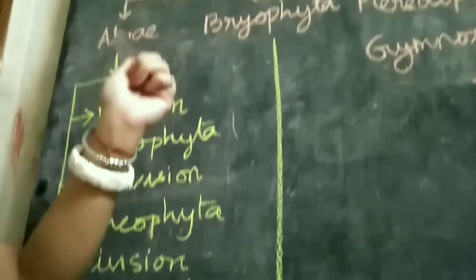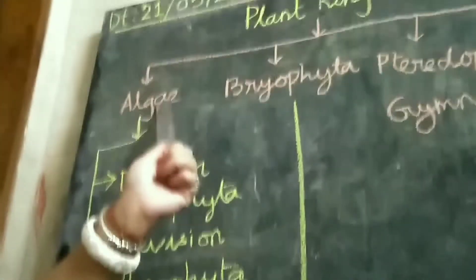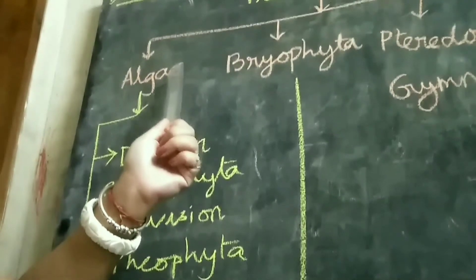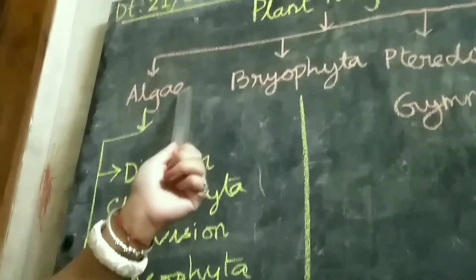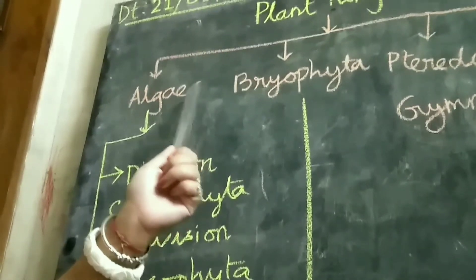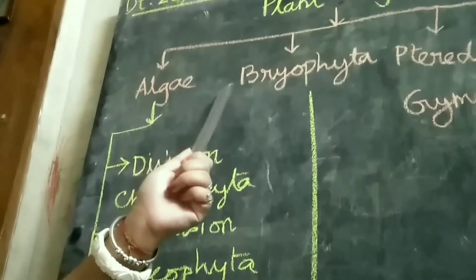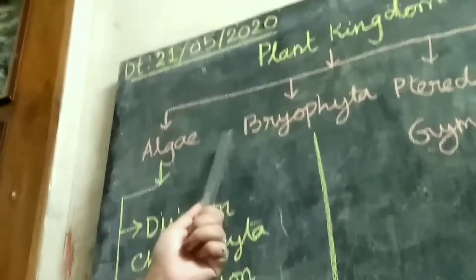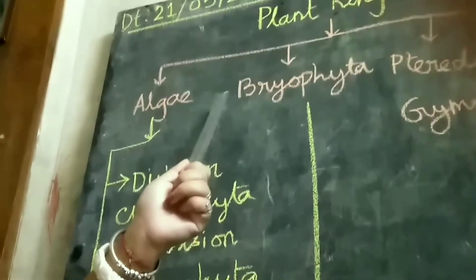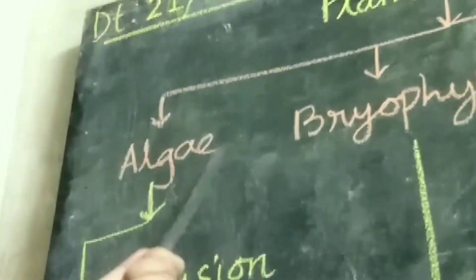Algae — the body is not differentiated into root, stem, or leaves. They lack a vascular tissue system, meaning xylem and phloem are absent. They have a cell wall of cellulose. They are autotrophs because of the presence of chlorophyll and the accessory pigments carotenoids. Their reserved food is mainly starch.